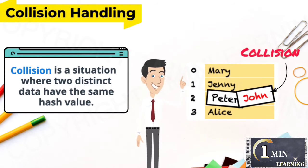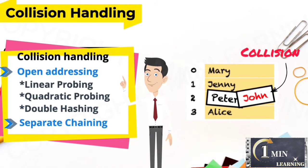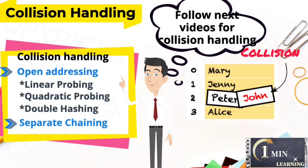To handle collision when hashing, there are many methods. It comes with two categories: open addressing and separate chaining. Please follow our next videos for collision handling.